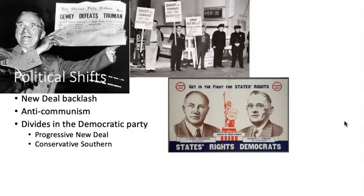This obviously very famous image — 'Dewey Defeats Truman,' the false headline — thinking that Truman's unpopularity was going to lead to his loss in 1948. It turns out not to be the case. New Deal backlash: people are anti-communist in this period, and this divides the Democratic Party. Being accused of being soft on communism becomes a very potent rhetorical tool. You have the Democratic Party divided between the progressive and New Deal wing, which Truman heads, wanting to continue and expand New Deal programs and extend them into social and racial justice terrain.